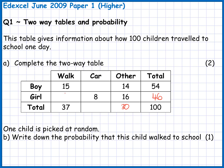In the walk group, I've got 15 boys and my total needs to be 37, so I do 37 take away 15 to work out that I need 22 girls. It's a good idea to check your answer as you go — if 22 is right, then adding up the total number of girls (walk, car and other) should give 46. Quick check: 22 and 8 makes 30, plus 16 gives 46, so it's right so far.